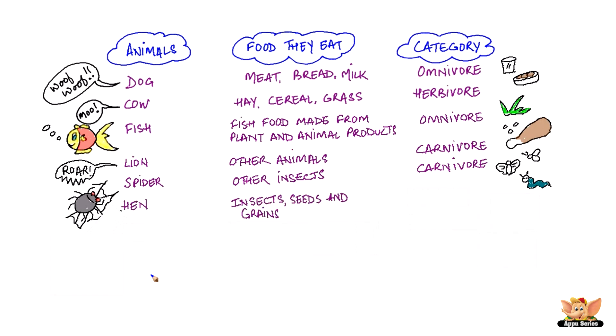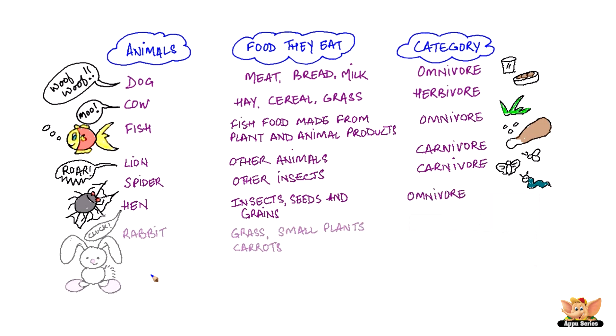Hens feed on small insects, worms, grains and seeds, so a hen is an omnivore. Rabbits eat small plants, grass and carrots, so a rabbit is a herbivore.